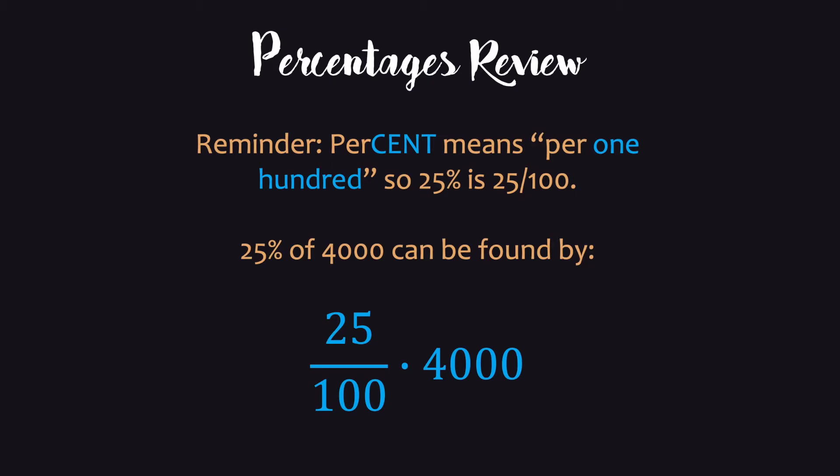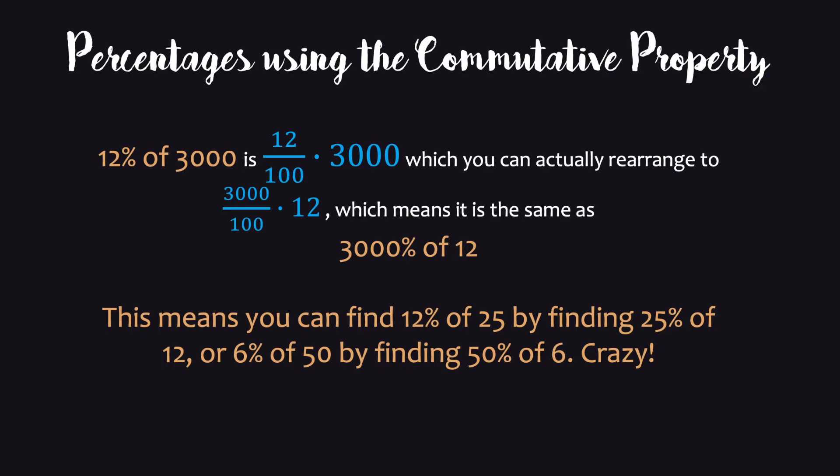Some of you like to use decimals — it doesn't matter how you find this. But here's the cool thing: you can do percentages using the commutative property. We know 12% of 3,000 is 12/100 times 3,000, and we can rearrange fractions to make this 3,000/100 times 12, which is 3,000 percent of 12. So 12% of 25 means you could find 25% of 12, which is one-fourth of 12 — that's 3 right away. Or 6% of 50: you can find 50% of 6, which is easy — that's 3.